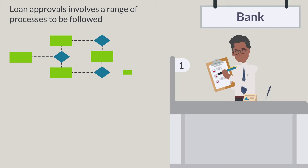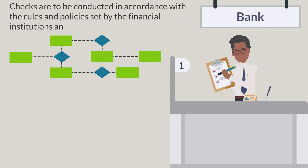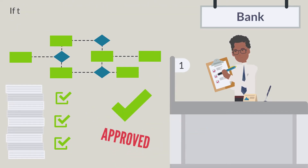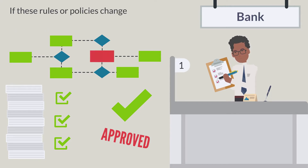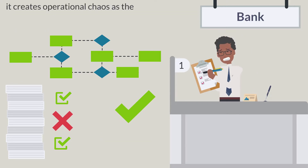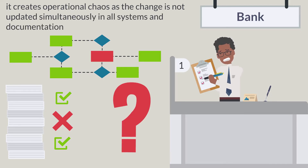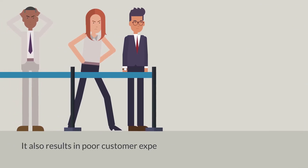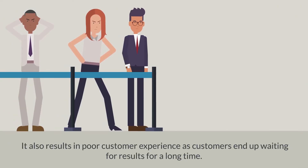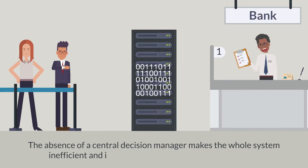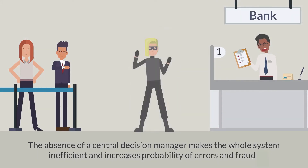Loan approvals involve a range of processes to be followed, and checks are to be conducted in accordance with the rules and policies set by the financial institutions and industry regulators. But when these rules or policies change, it creates operational chaos as the change is not updated simultaneously in all systems and documentation. It also results in poor customer experience, as customers end up waiting for results for a long time. The absence of a central decision management platform makes the whole system inefficient and increases probability of errors and fraud.